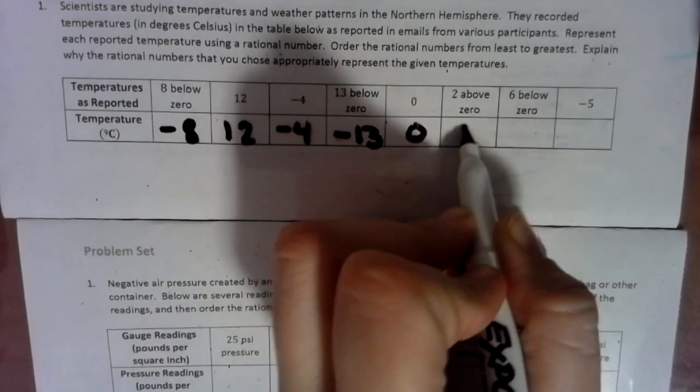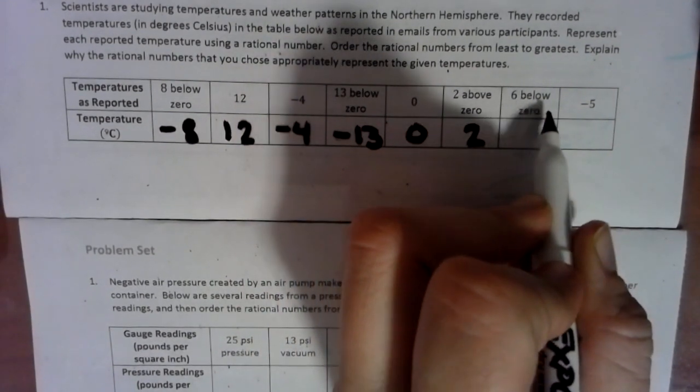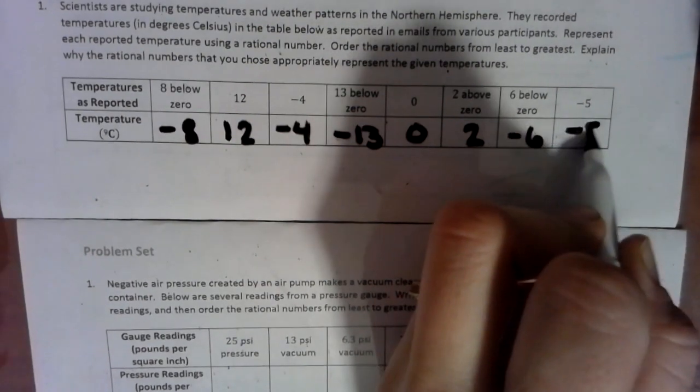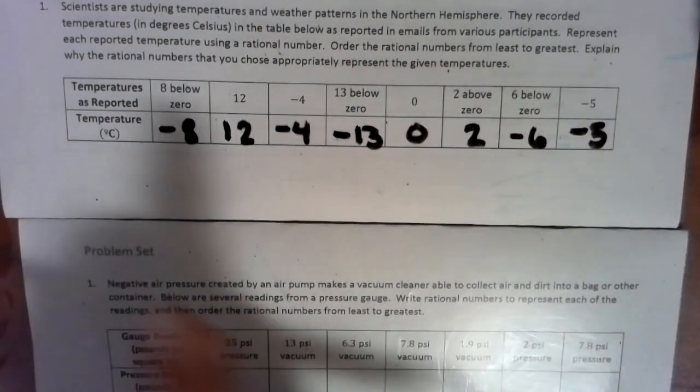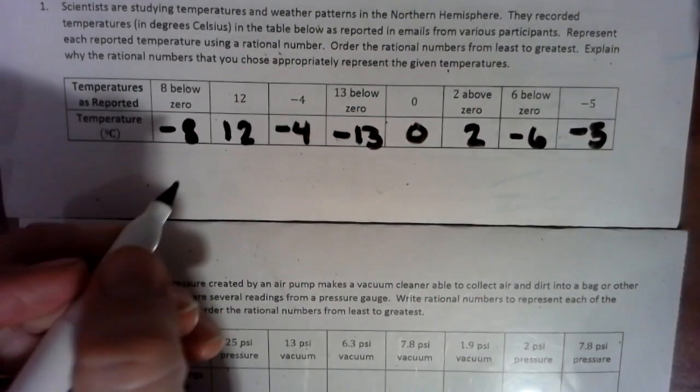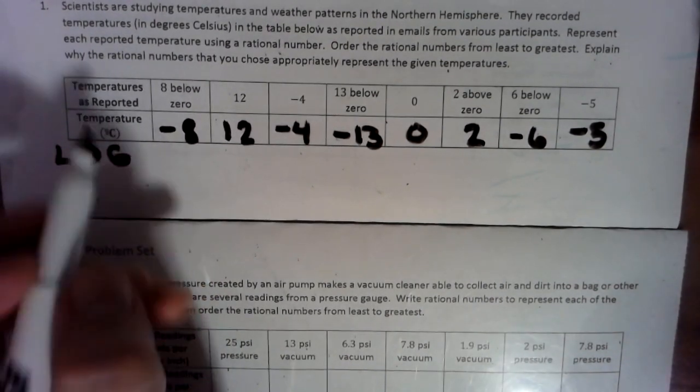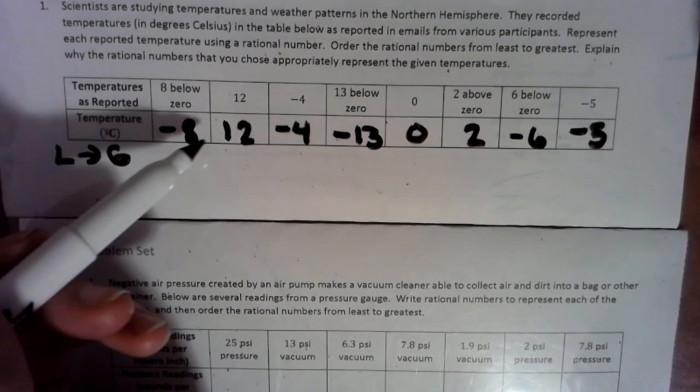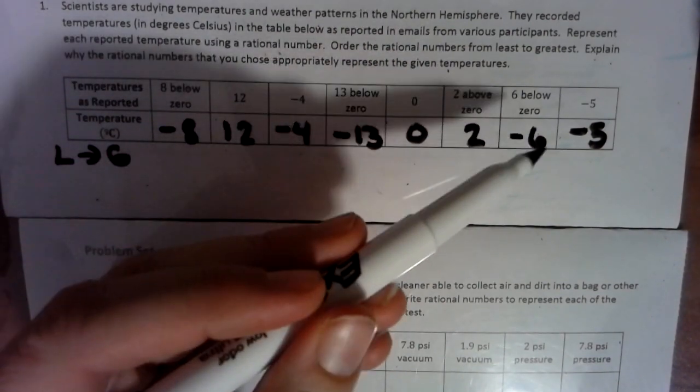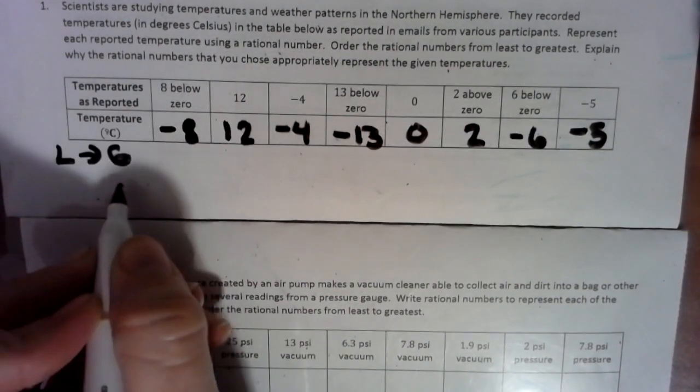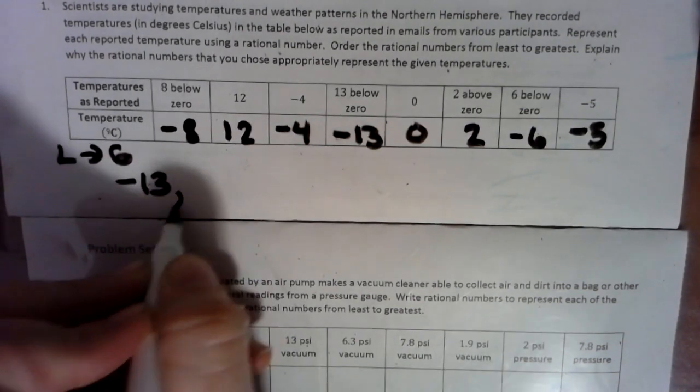6 below 0 would be negative 6 and a negative 5. So now we have to take these numbers and put them in order from least to greatest. We're looking for the biggest negative. So we've got negative 8, negative 4, negative 13, negative 6, and negative 5. Obviously, negative 13 is the worst we can have.